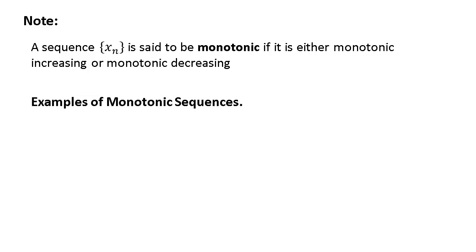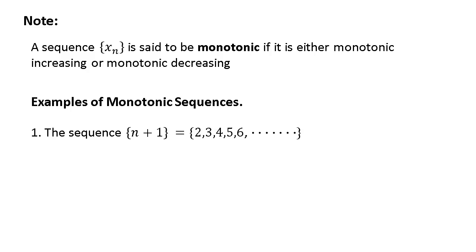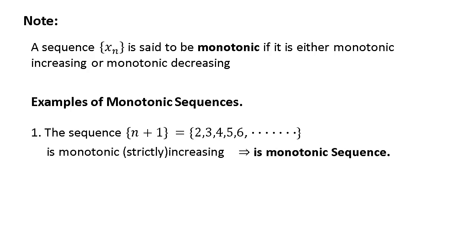Now let us come to examples of monotonic sequences. Consider the sequence with nth term n+1; the terms are 2, 3, 4, 5, 6, and so on. If you take any term and its preceding term, the condition of definition 1 holds. Therefore, it is a monotonic strictly increasing sequence, and obviously it implies it is a monotonic sequence.